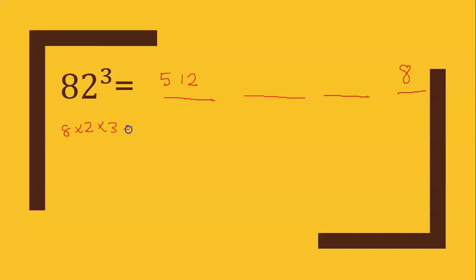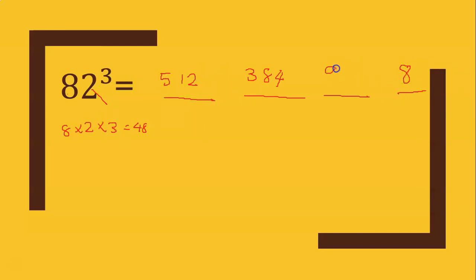And the next step: 48 into 8, then 48 into 2, that is 96. The ones place is 8, that is 6, next is 9.